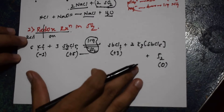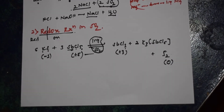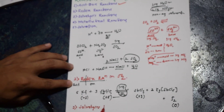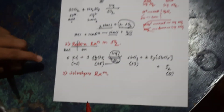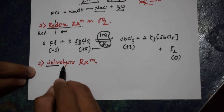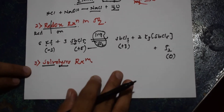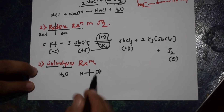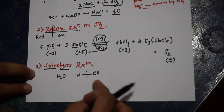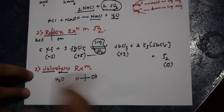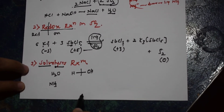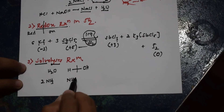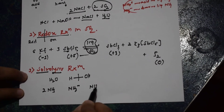The next case is solvolysis. 'Solvo' means solvent; 'lysis' means breaking. The breaking of the solvent is nothing but solvolysis. In water, H₂O breaks into H and OH, which add to different components — that is hydrolysis. In the same way for ammonia, NH₃ breaks to give NH₂⁻ and NH₄⁺ — this is called aminolysis because ammonia is the solvent breaking down.